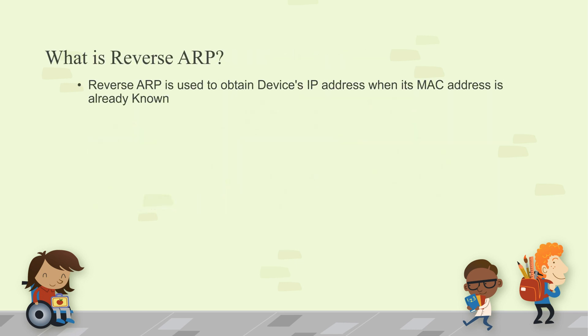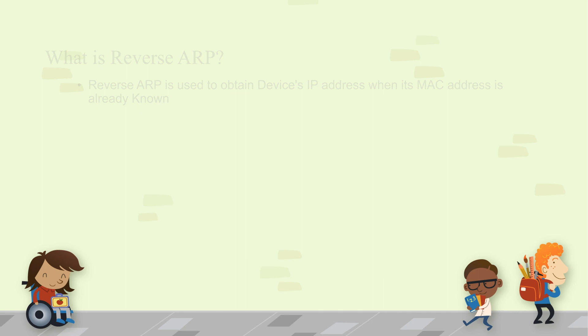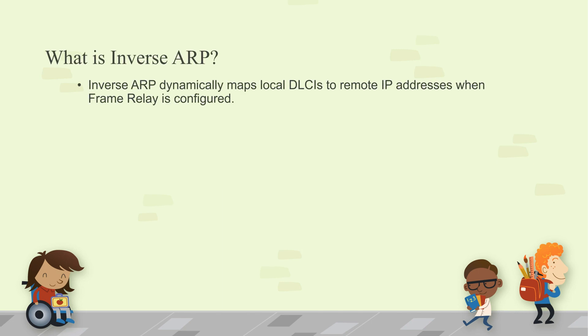What is Reverse ARP? Reverse ARP is used to obtain a device's IP address when its MAC address is already known. What is Inverse ARP? Inverse ARP dynamically maps local DLCIs to remote IP addresses when Frame Relay is configured.